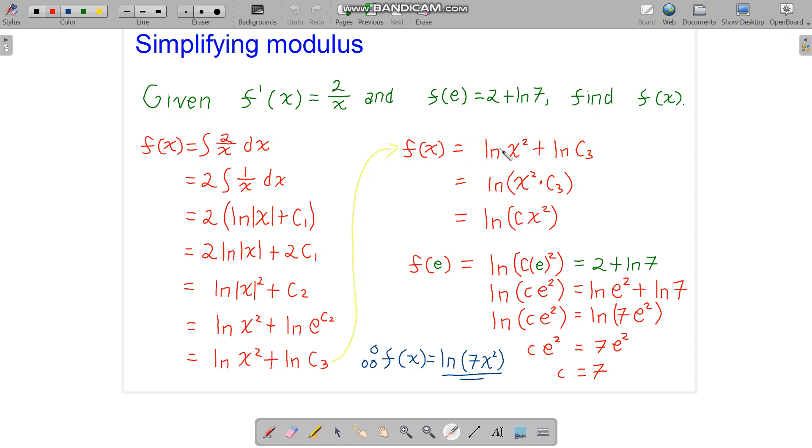So using the product rule in logarithm, we can multiply the argument. So we combine the logarithm. And we have the final result. We are just calling it c now, c times x squared. This is f of x.